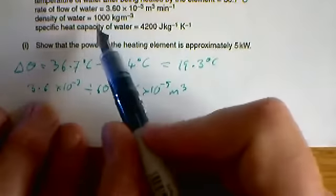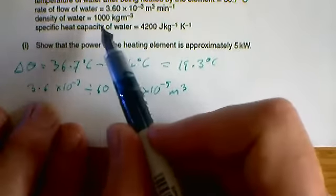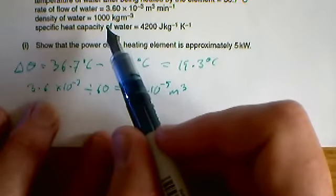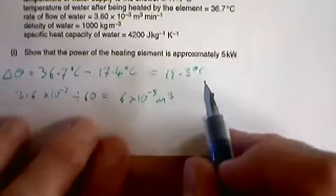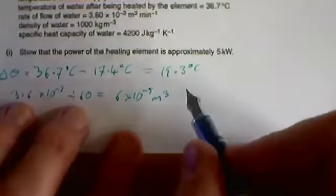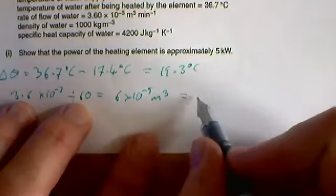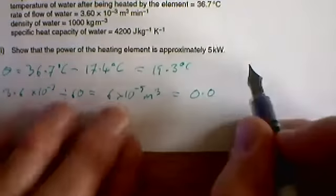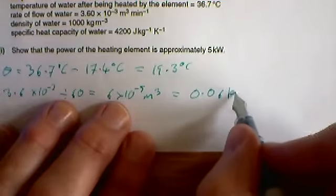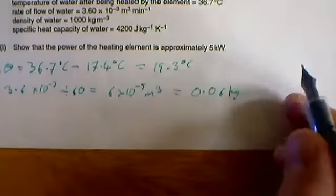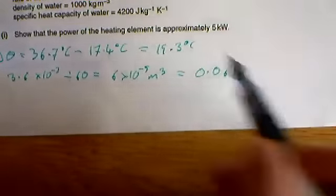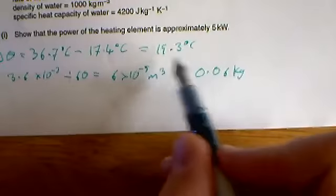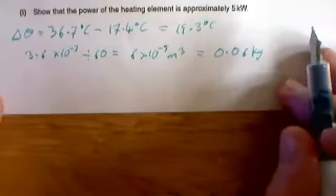If we multiply that by 1000 we get how much water is flowing, which is 0.06 kilograms. That gives us the mass, which is what we need because now we've got 0.06 kilograms of water being raised by 19.3 degrees every second.